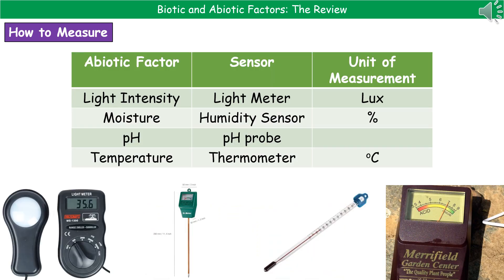Finally, let's look at how we measure these abiotic factors using simple equipment. Light intensity is measured using a light meter, with the unit of lux. Moisture is measured using a humidity sensor, given as a percentage. pH is measured using a pH probe — remember, pH has no units. And temperature is measured with a thermometer, recorded in degrees Celsius.